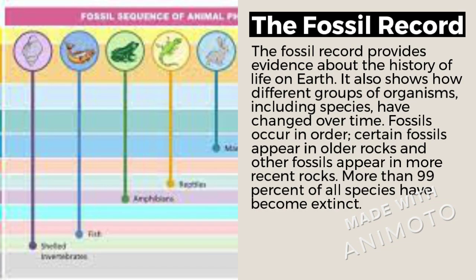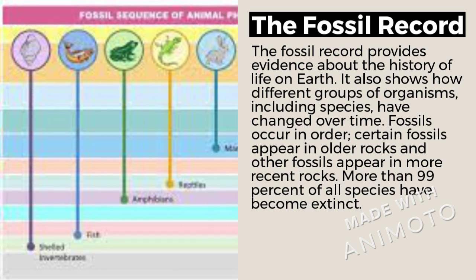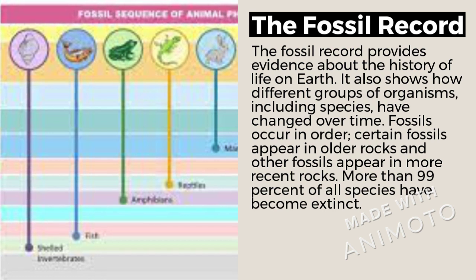The fossil record provides evidence about the history of life on Earth and it also shows how organisms and species have changed over time. Fossils occur in order — certain fossils appear in older rocks and other fossils appear in more recent rocks. More than 99% of all species have become extinct and their remains are either fossils or have deteriorated.